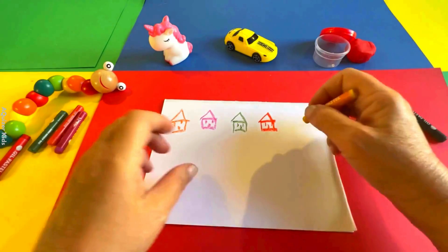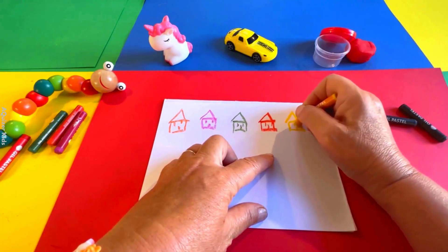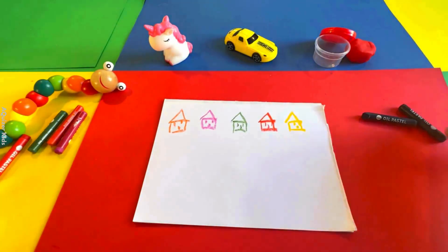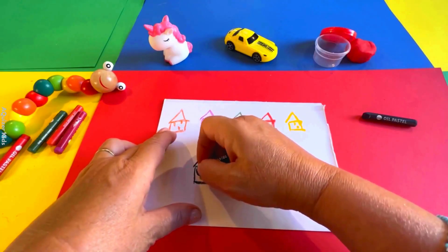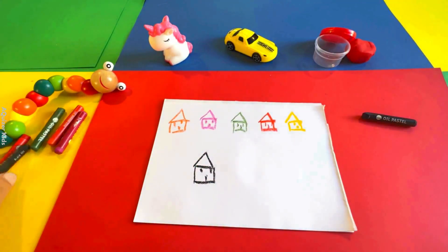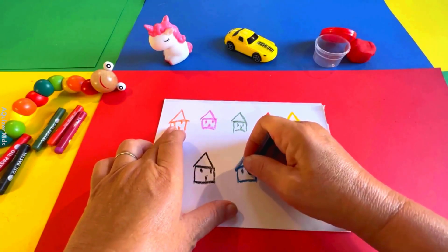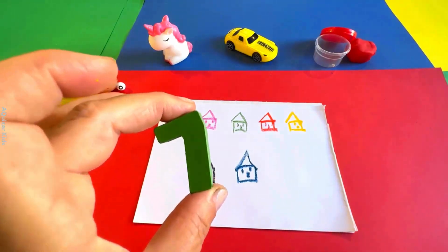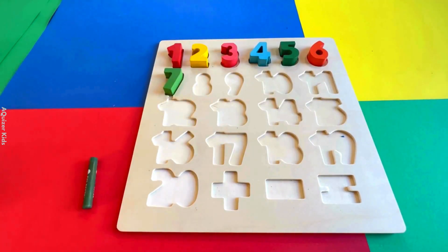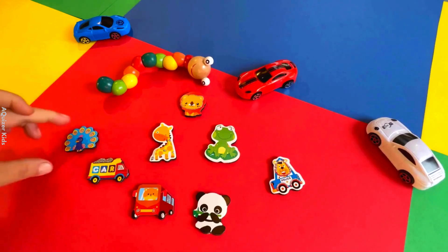Four. A red house. Five. A yellow house. Six. A black house. Seven. A blue house. There are seven houses. One, two, three, four, five, six, and seven.